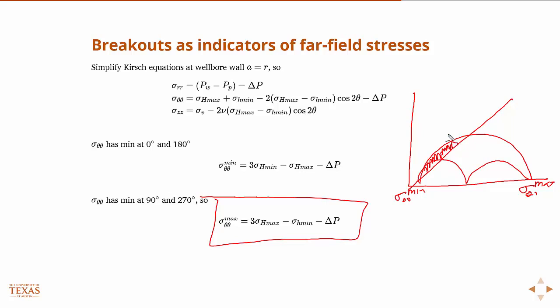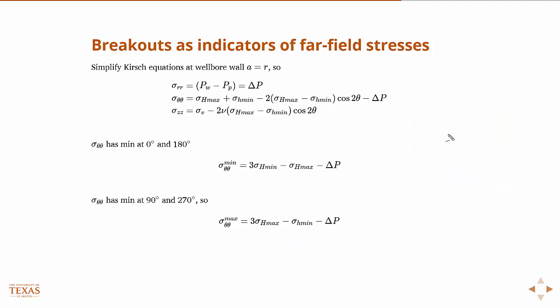So our breakouts are going to be mainly dependent upon the difference in the maximum and minimum hoop stress. So if we subtract those two, then we get this. And so we see that the difference in the minimum and maximum hoop stress is basically proportional to the difference in principal stresses and therefore in correspondence with them.